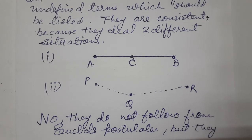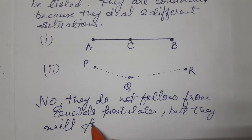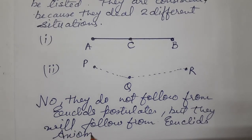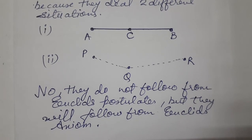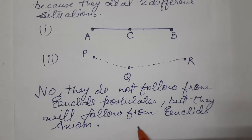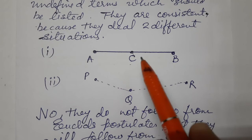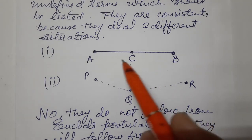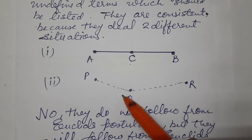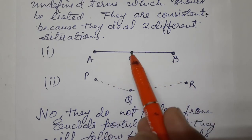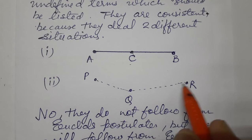They follow from Euclid's axiom — the axiom being: given two distinct points, there is a unique line that passes through them. These two postulates given to us have several undefined terms, but they are consistent because they deal with two different situations — one about a point C lying between two points A and B, and another about three non-collinear points.